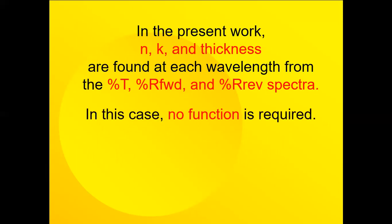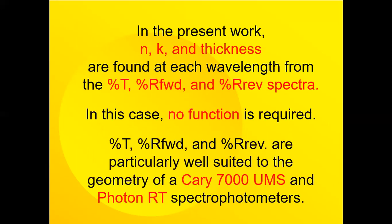In this case, there are no functions used. So the percent T, percent R forward or reverse are particularly well suited to the geometry of the Cary 7000 with the universal measuring system and the Photon RT spectrophotometers made in Europe.